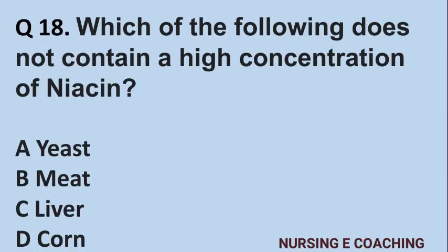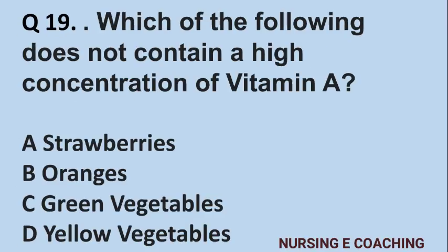Question number 18: Which of the following does not contain a high concentration of niacin? A) Yeast, B) Meat, C) Liver, D) Corn. Answer is D) Corn.